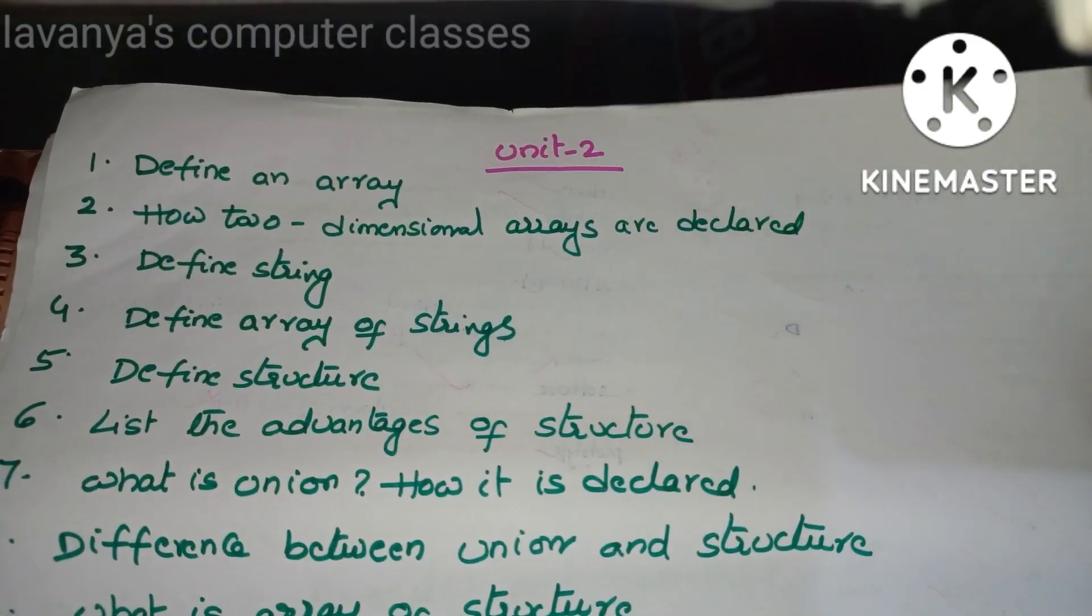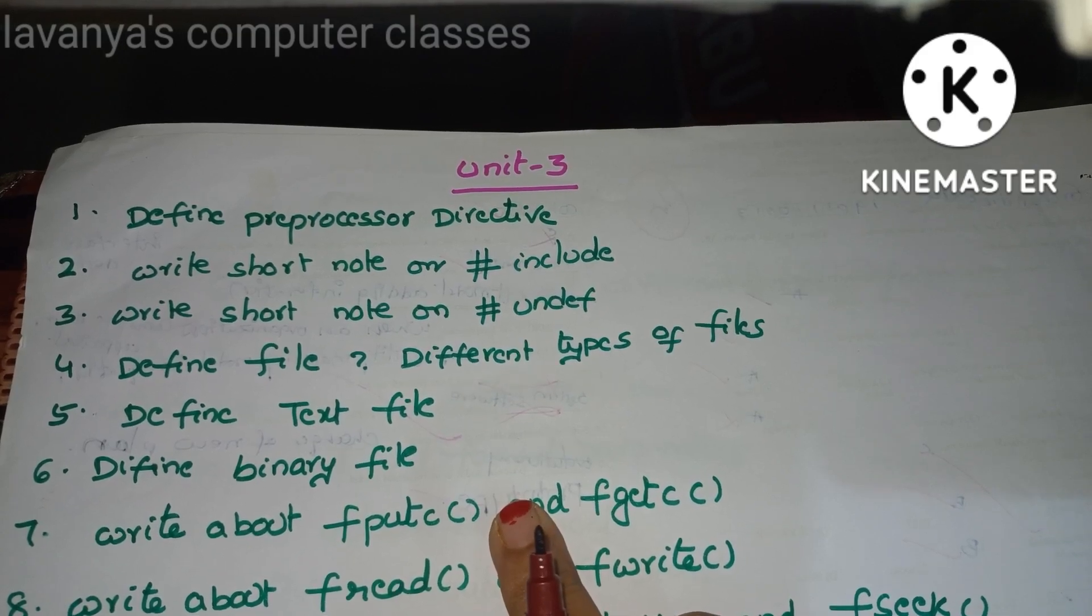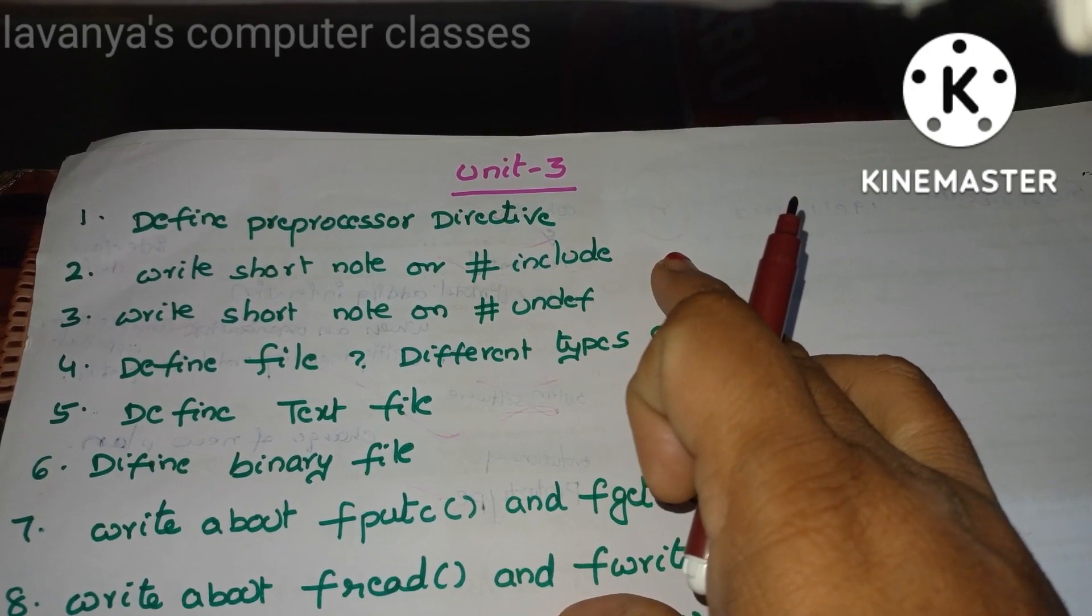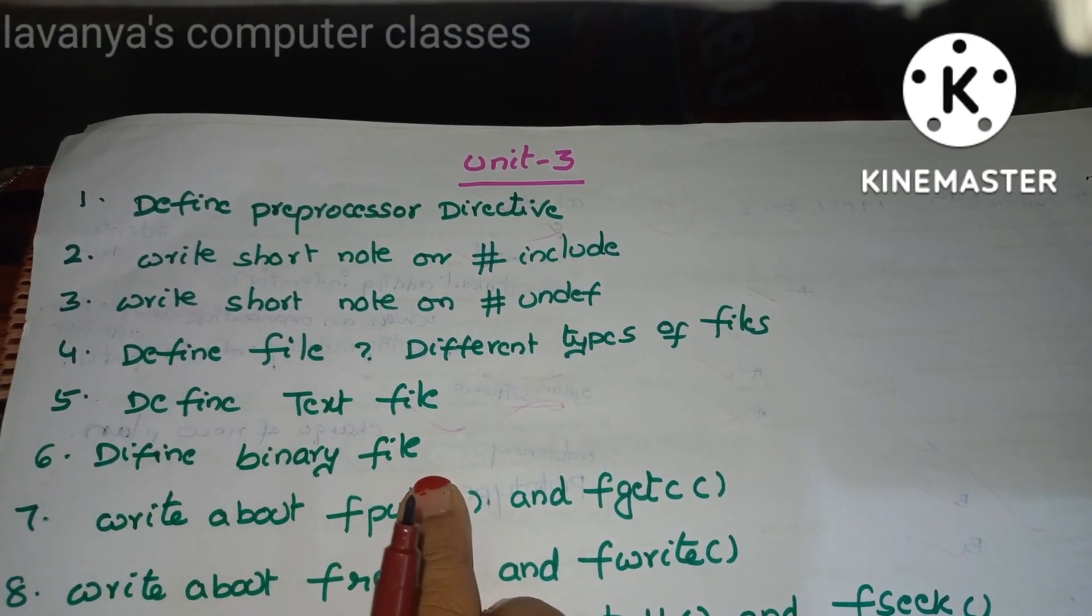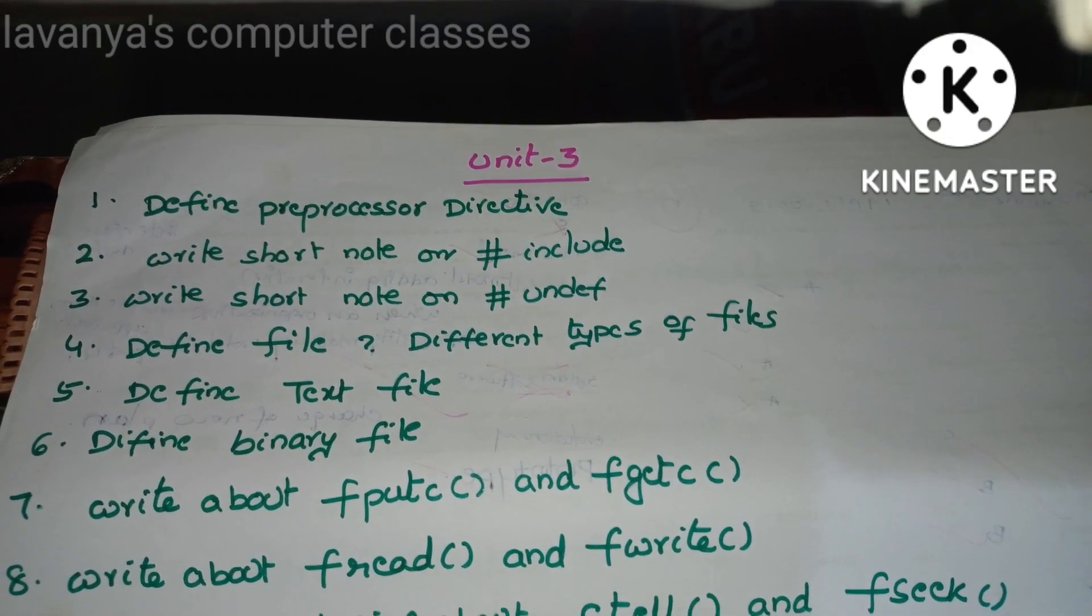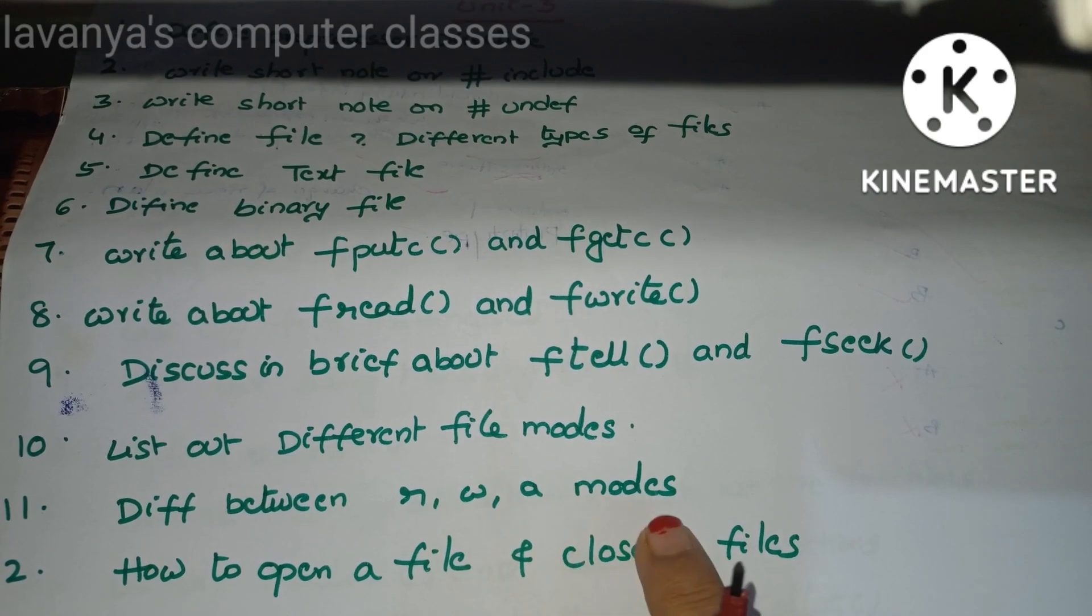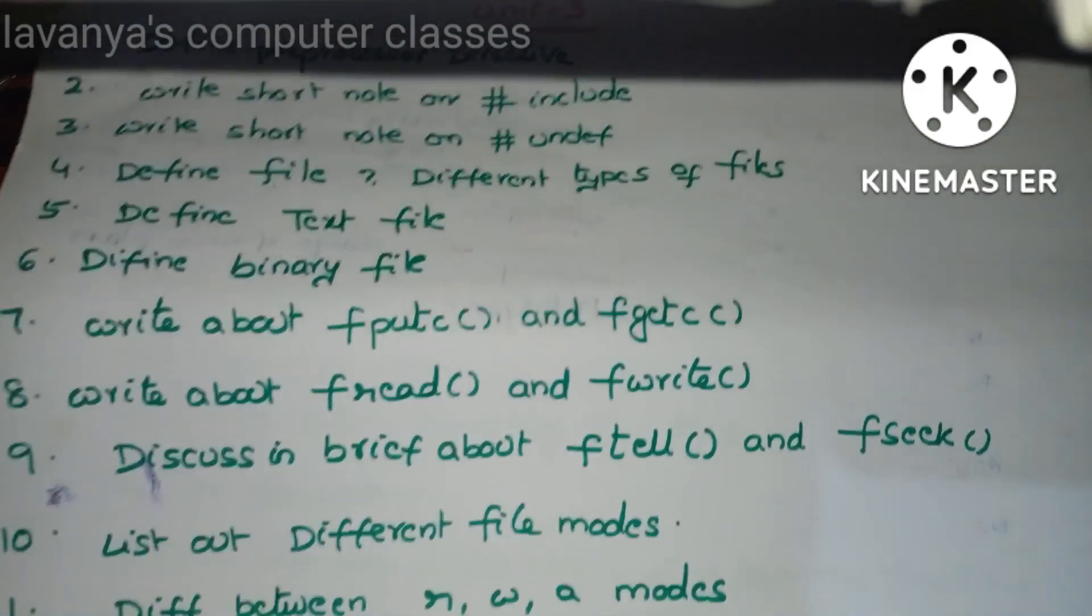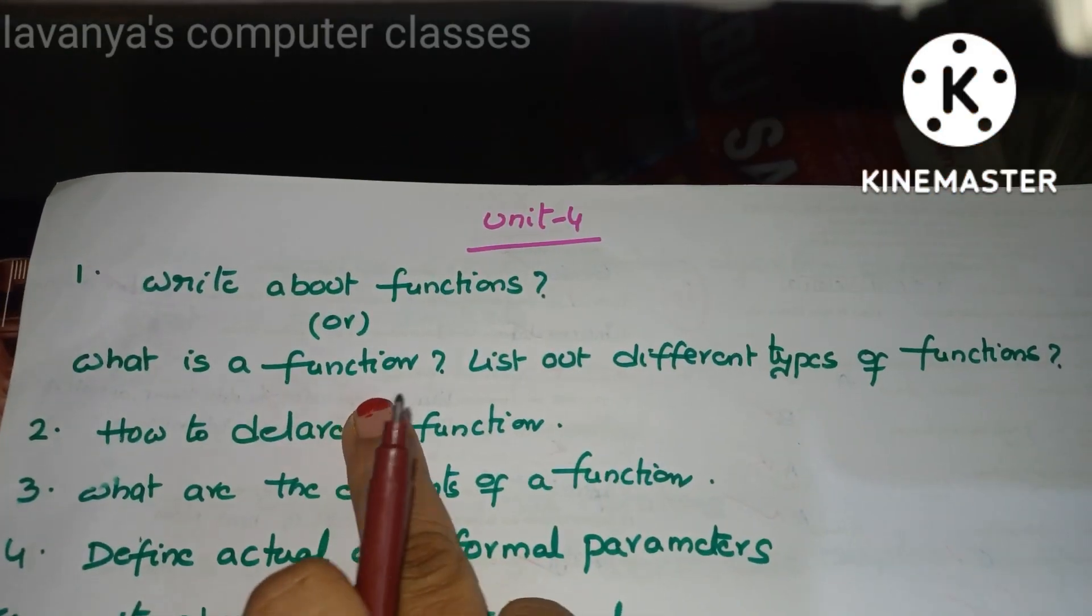What is array of structure? What is enumerated data type? Write advantages and disadvantages of pointers. These are the important short answer questions in Unit 2. Unit 3: define preprocessor directive, write short note on hash include, write short note on hash and define in preprocessor. So many are there, so many examples are there, but I explained. I will give here only two, but they are asking anyone: hash if-else, anything. Next, define file, different types of file, just mention the names. Define text file, define binary file. Write about fputc and fgetc functions, write about fread and fwrite functions, discuss in brief about ftell and fseek functions. List out different file modes and difference between r, double r, w, a modes. How to open a file and how to close a file, and also write fopen and fclose functions.